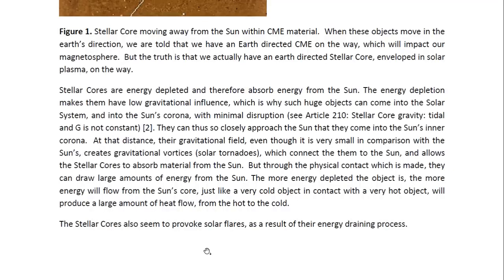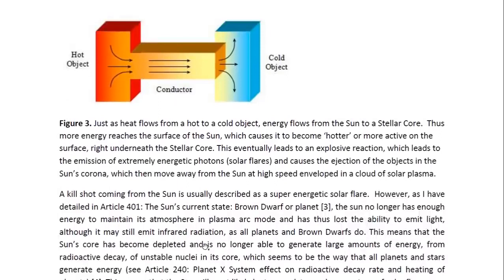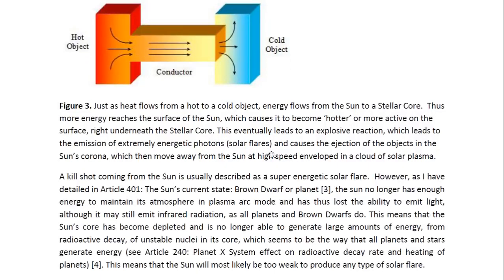The stellar cores also seem to provoke solar flares as a result of the energy draining process. This diagram illustrates the energy flow that occurs between the sun and the stellar core. Because just as heat flows from a hot to a cold object, energy flows from the sun to a stellar core. Thus more energy reaches the surface of the sun — the surface becomes hotter or more active and the electric field increases at that point, right underneath the stellar core. This eventually leads to an explosive reaction, which leads to the emission of extremely energetic photons — in other words, a solar flare — and causes the ejection of the objects in the sun's corona, which then move away from the sun at high speed, enveloped in a cloud of solar plasma.